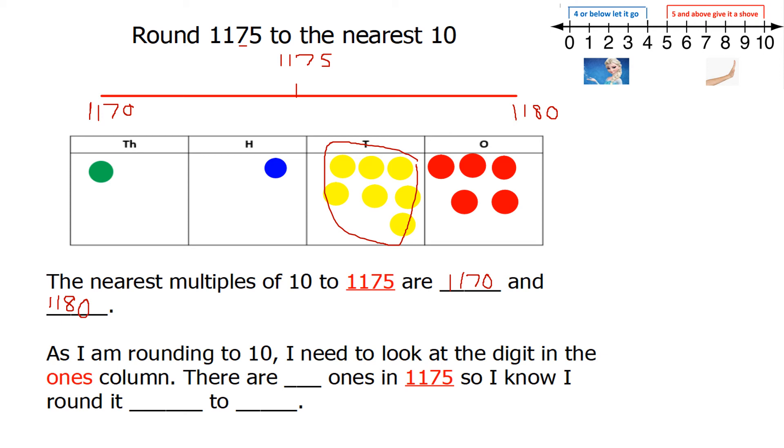As I'm rounding to 10, I need to look at the digit in the ones column. There are 5 ones in 1175, so I know I need to round it up. I need to give it a shove. Which means our answer is 1180.